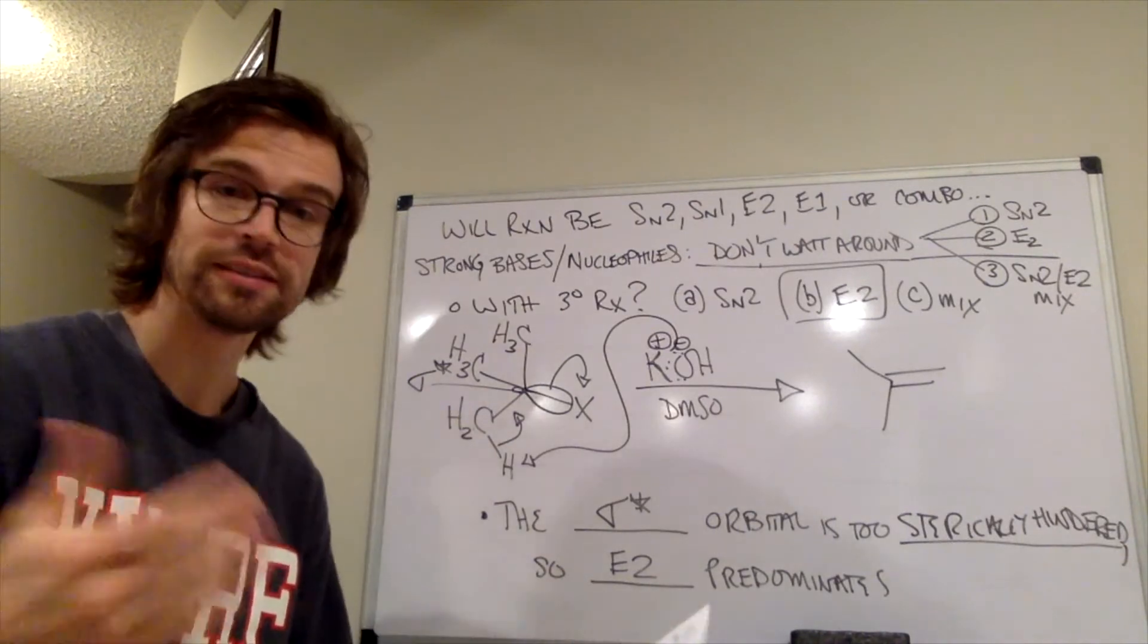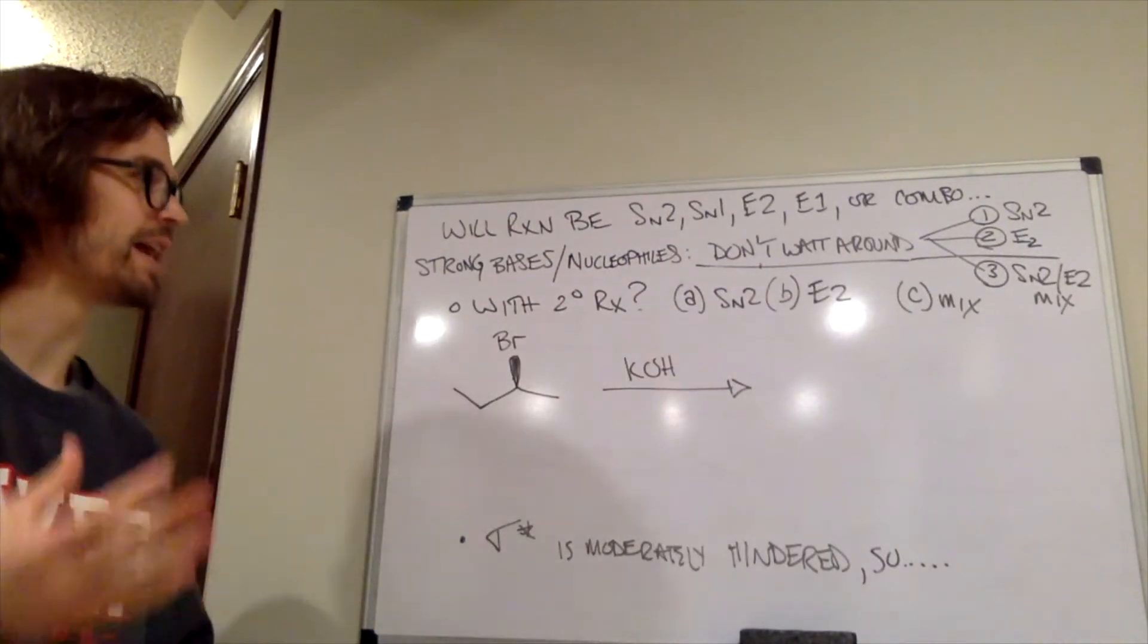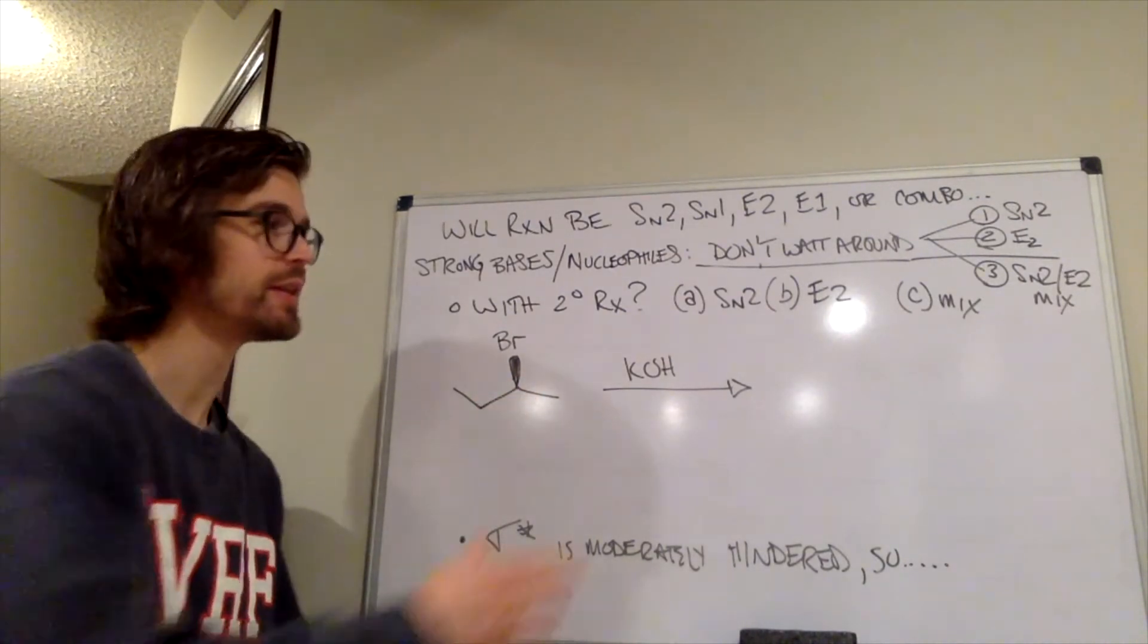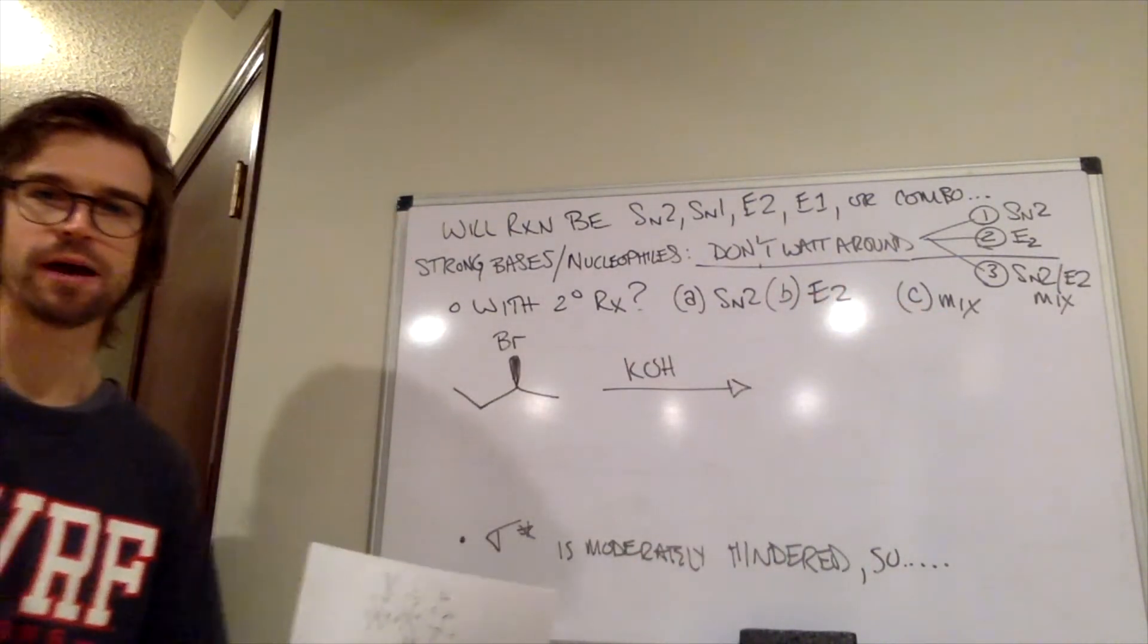What about if we have a secondary alkyl halide? That's where we're going next. So what happens with our secondary alkyl halide? Again, take a minute, jot something down, think about it, is it going to be an SN2, E2, or a mixture of those two reaction pathways?